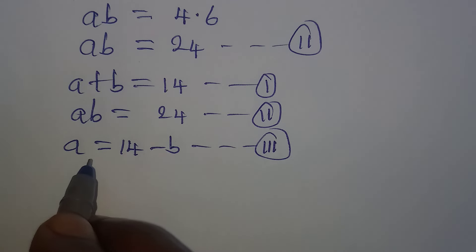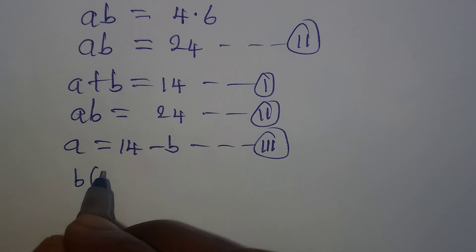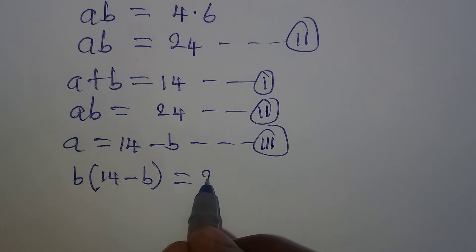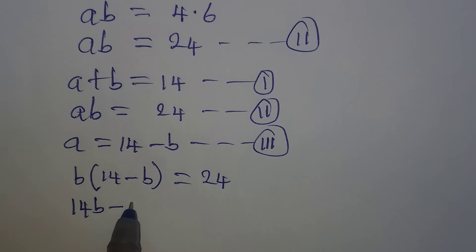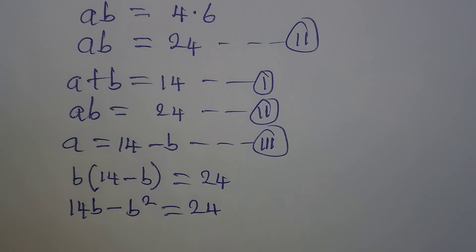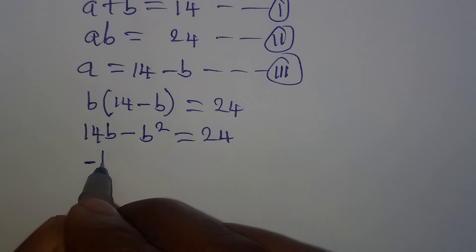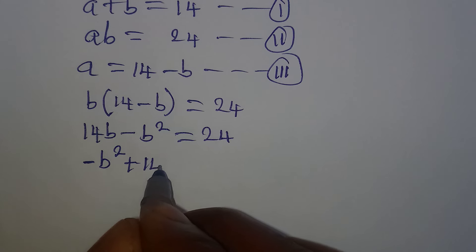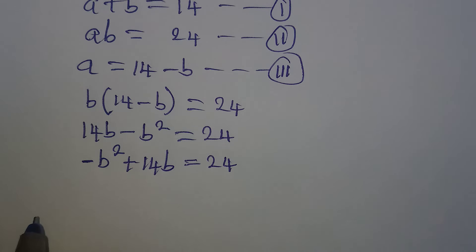We put this value of a into equation two, so we have b times (14 minus b) equals 24. Expanding gives 14b minus b² equals 24. Let us continue — we rearrange this and get minus b² plus 14b equals 24.